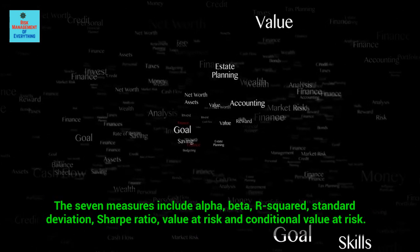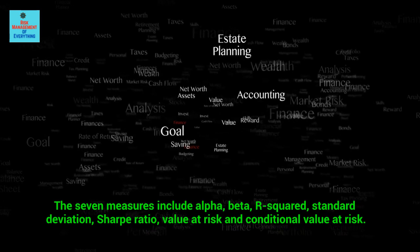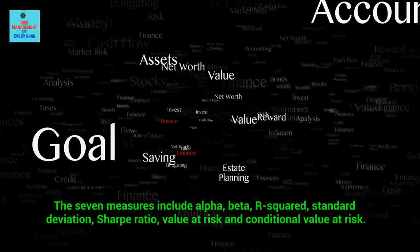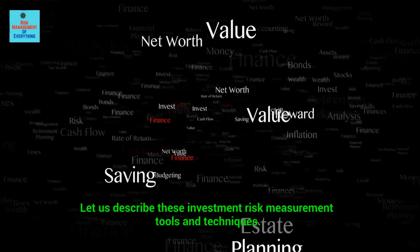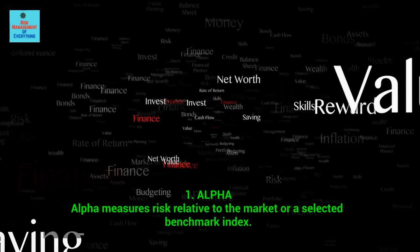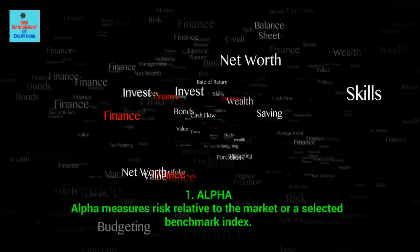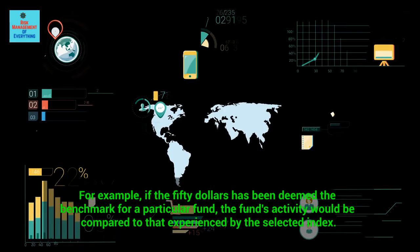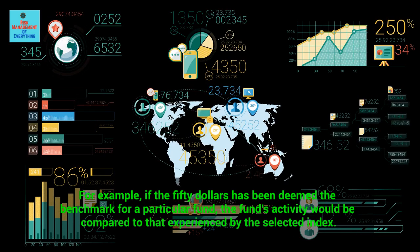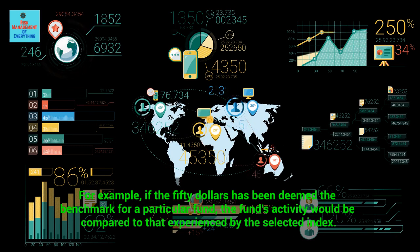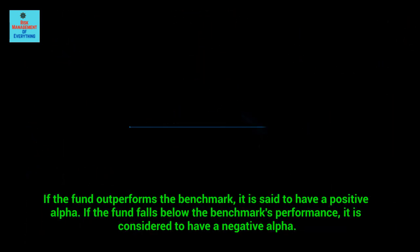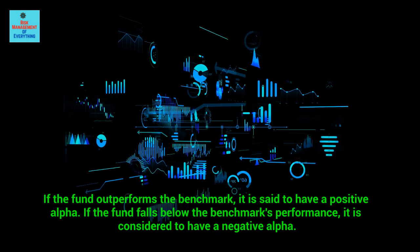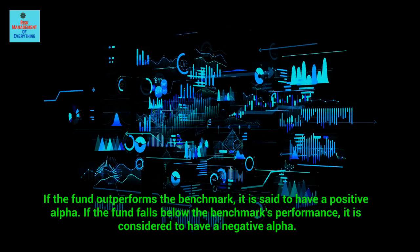Alpha measures risk relative to the market or a selected benchmark index. For example, if the S&P 500 has been deemed the benchmark for a particular fund, the fund's activity would be compared to that experienced by the selected index. If the fund outperforms the benchmark, it is said to have a positive alpha. If the fund falls below the benchmark's performance, it is considered to have a negative alpha.